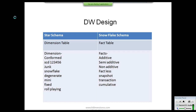To understand star schema and snowflake schema, we must first understand three factors: the different types of tables in a data warehouse. There are two types of tables — the dimension table and the fact table.